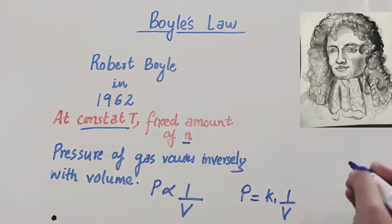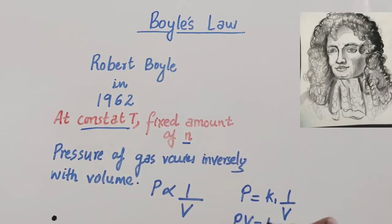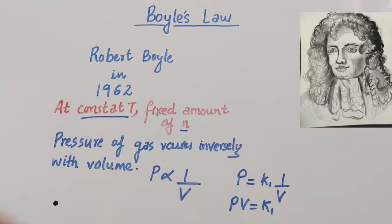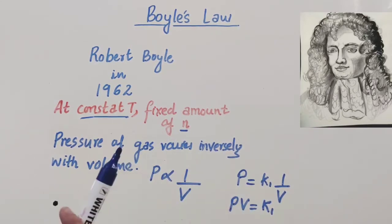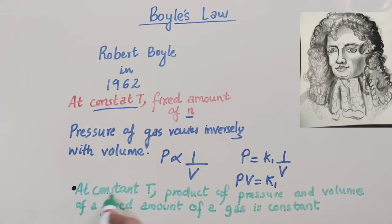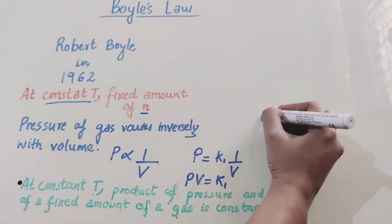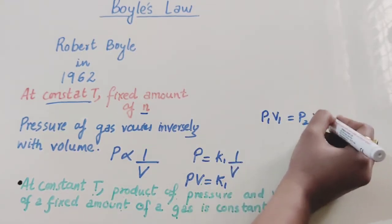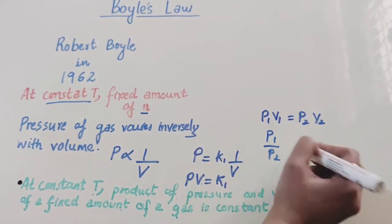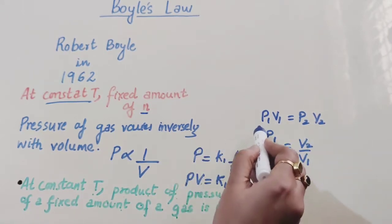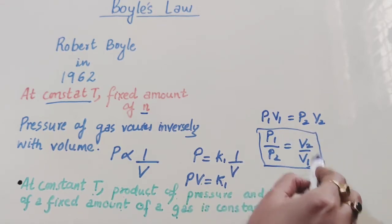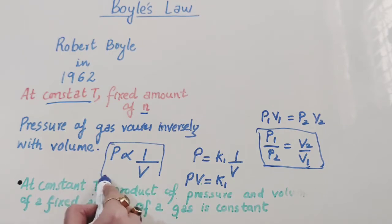When we remove the proportional sign we get the proportionality constant k₁, so P = k₁ × (1/V), or we can say PV = k₁. This law can also be formulated as: the product of pressure and volume for a fixed amount of gas at constant temperature is always a constant. We can rewrite this as P₁V₁ = P₂V₂ = constant, and P₁/P₂ = V₂/V₁. This is the Boyle's Law relation used to solve numericals.